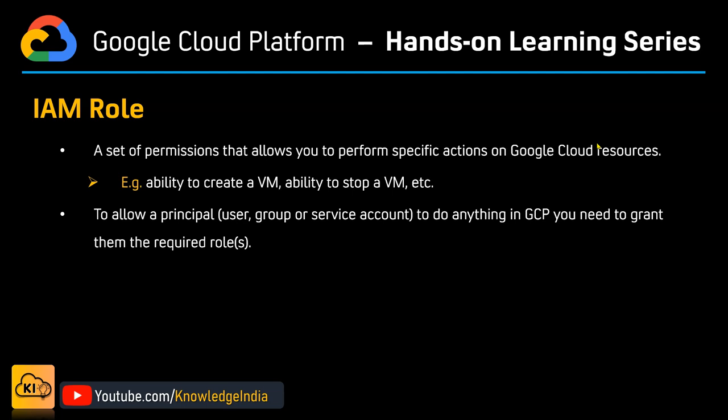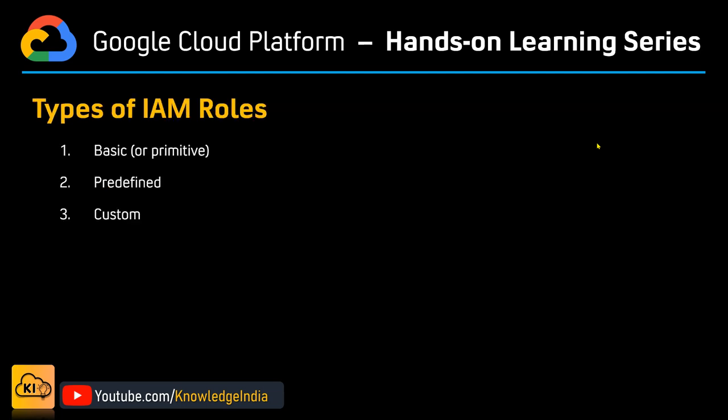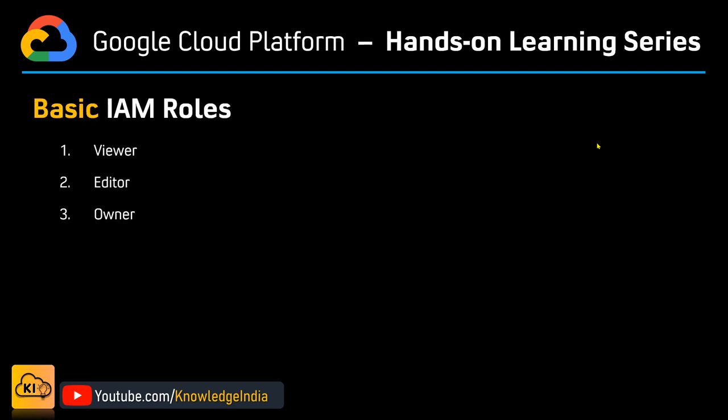What are the different types of IAM roles? The first type is basic — it was also called primitive. Then you have predefined and you have custom. We'll go ahead and try to understand all three of them one by one and see them in the console. So the first type is the basic IAM roles, and you have viewer, editor, and owner.